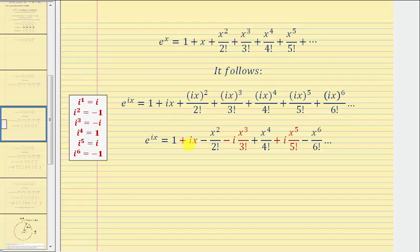So ix doesn't simplify, but for this term here, since i squared is equal to negative one, this third term becomes minus x squared divided by two factorial. In the next term, we'd have i cubed, which equals negative i. So this term here simplifies to minus i times x cubed divided by three factorial. The next term contains i to the fourth, which equals one. So this simplifies to plus x to the fourth divided by four factorial. i to the fifth is equal to i. So we have plus i times x to the fifth divided by five factorial and so on.